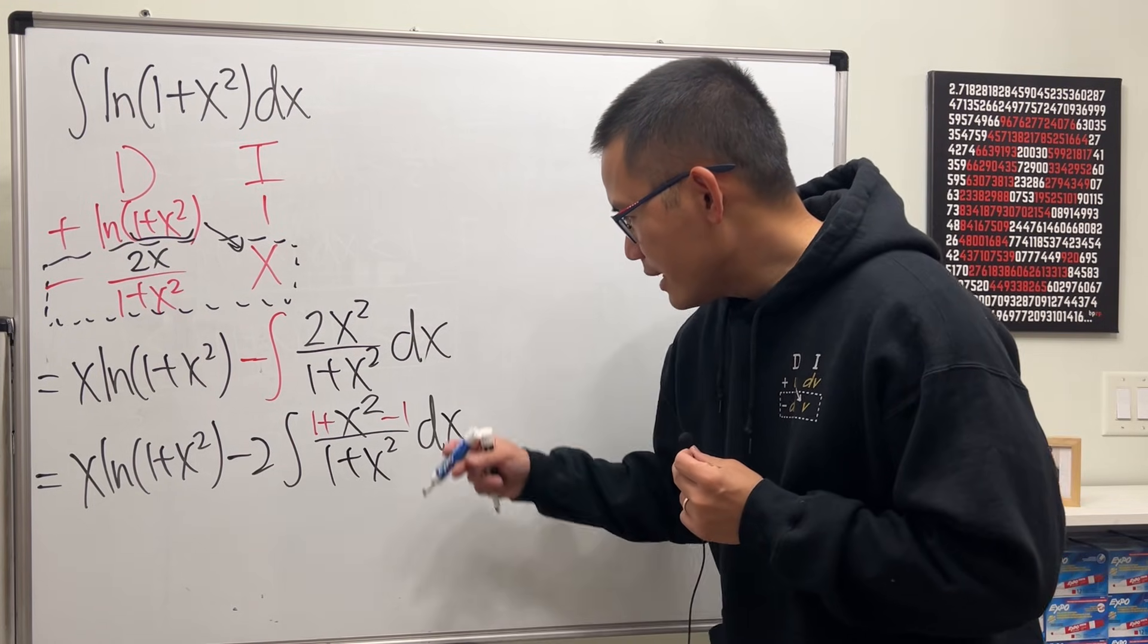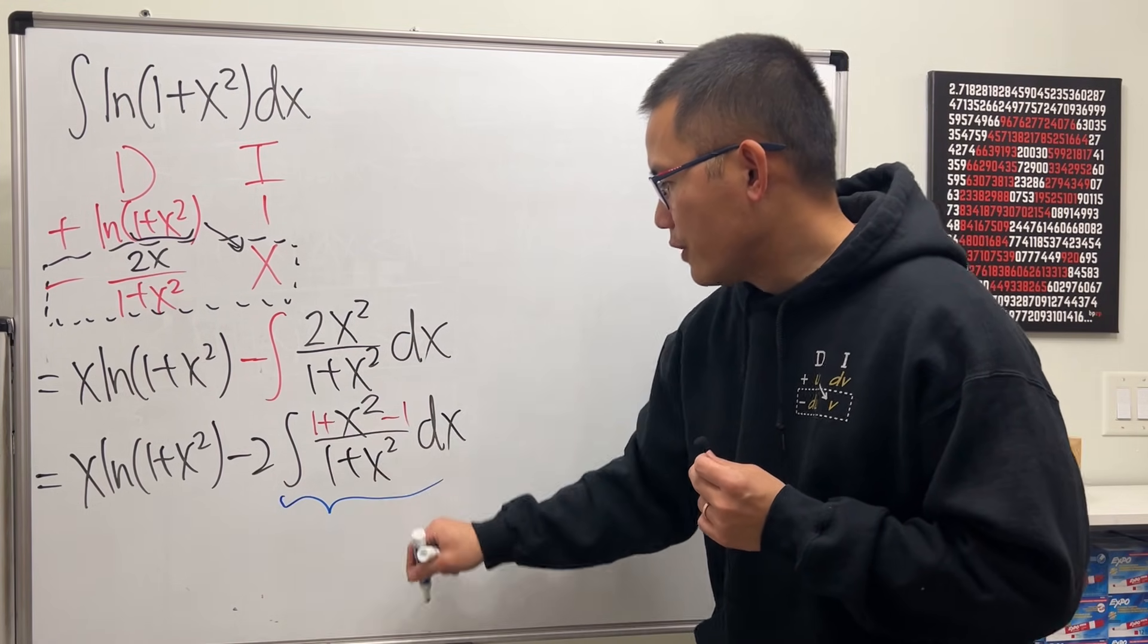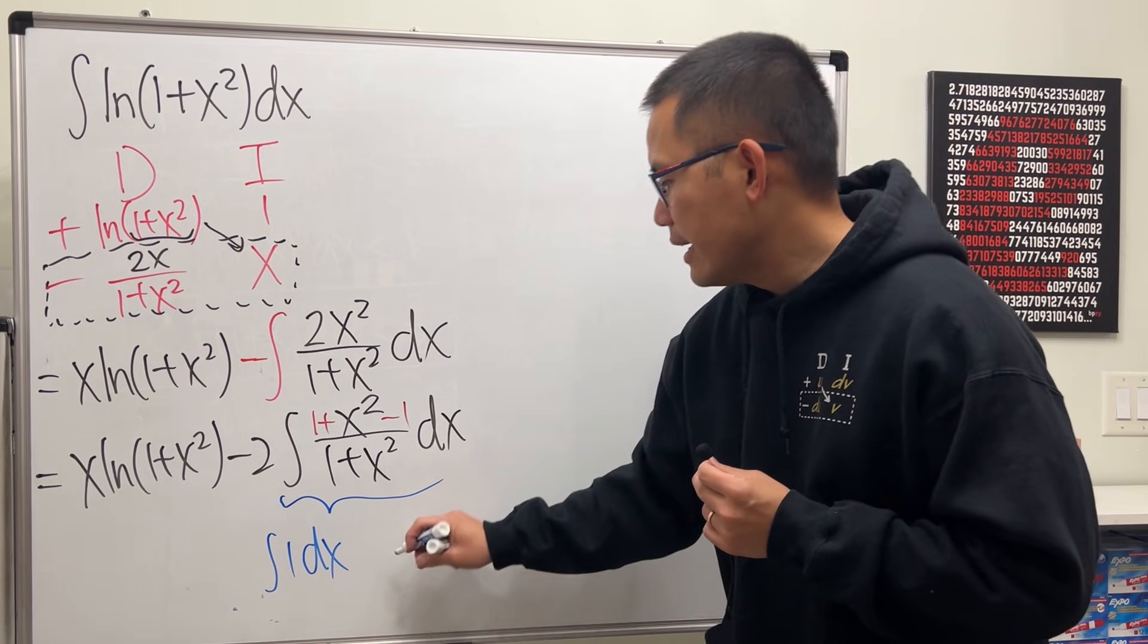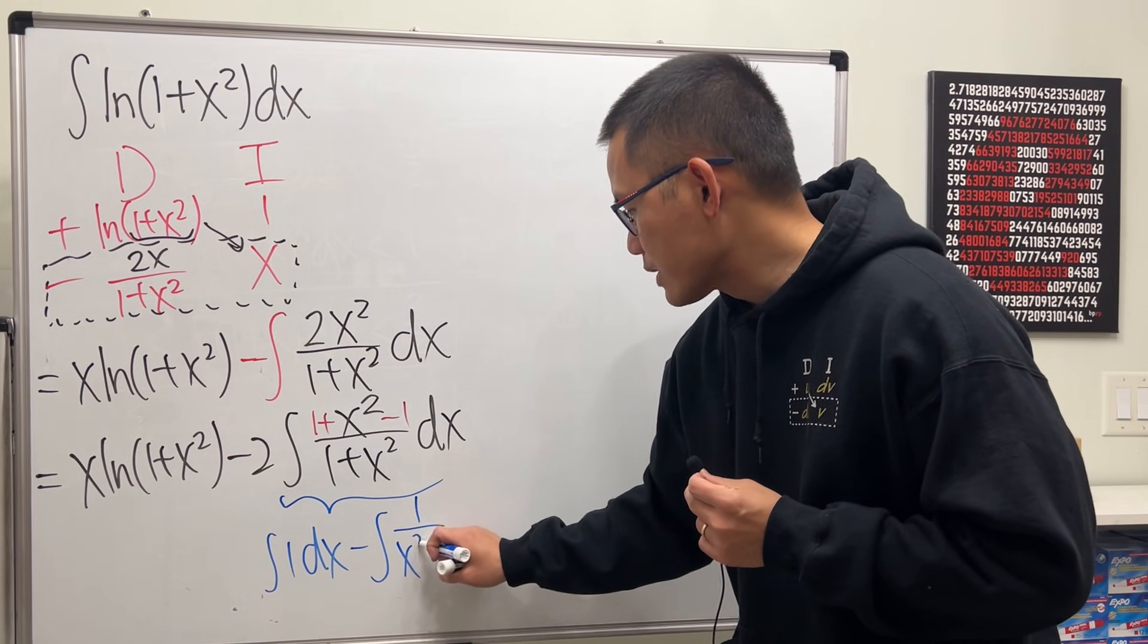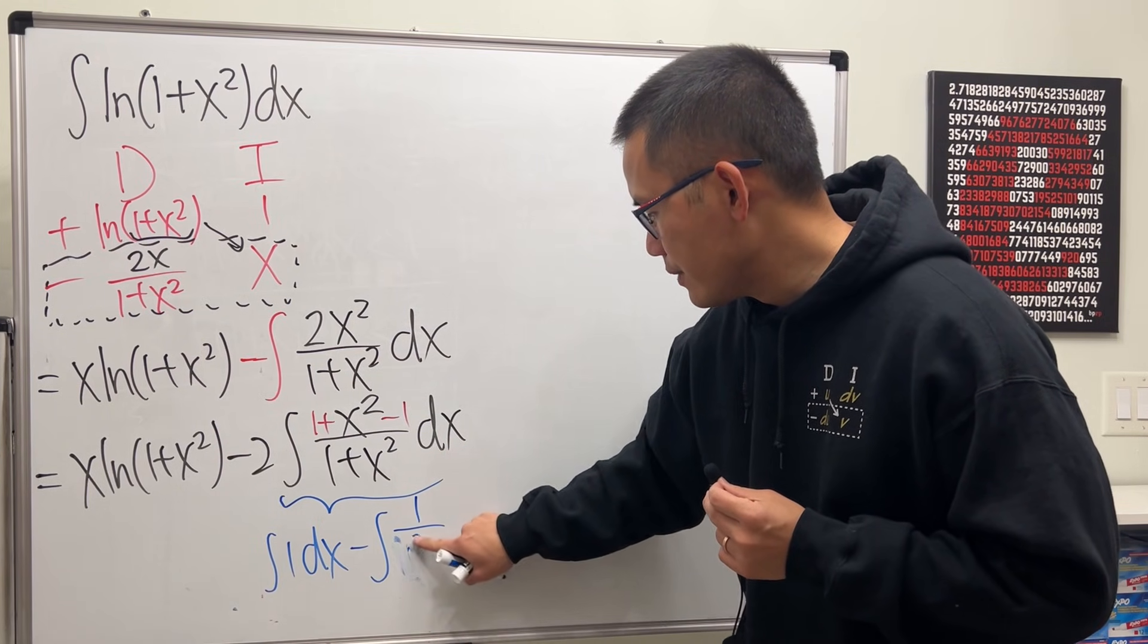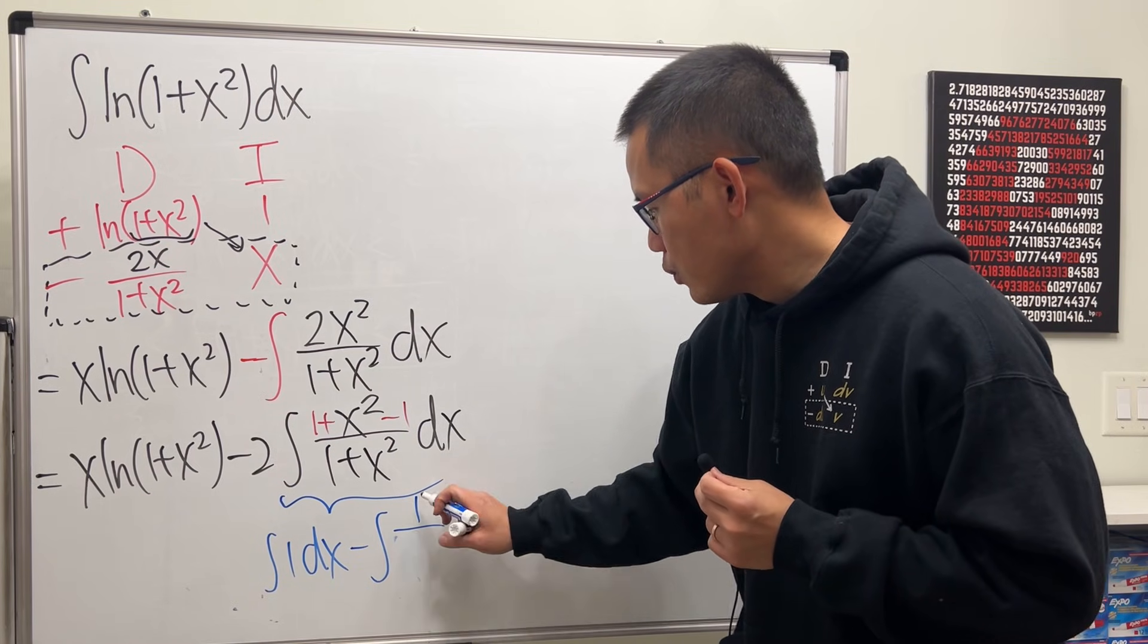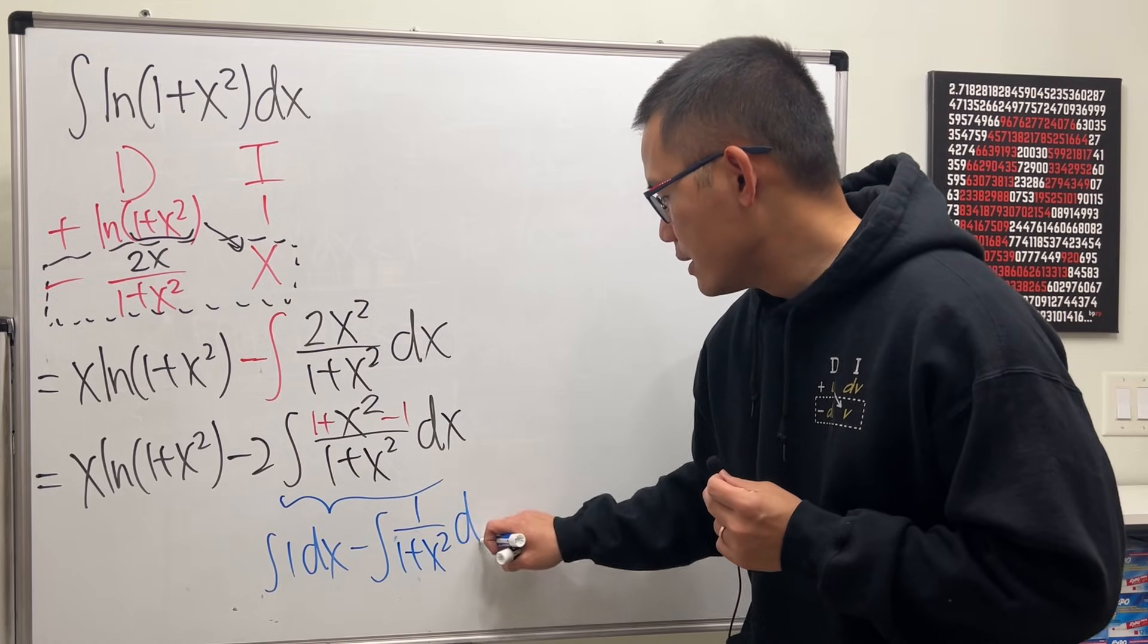So, if you look at this part now, I can do this over that, so it's just the integral of 1, close that, and then minus the integral of 1 over x. Well, let's put this down. 1 over 1 plus x squared dx.